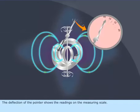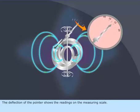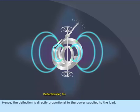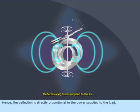The deflection of the pointer shows the readings on the measuring scale. Hence, the deflection is directly proportional to the power supplied to the load.